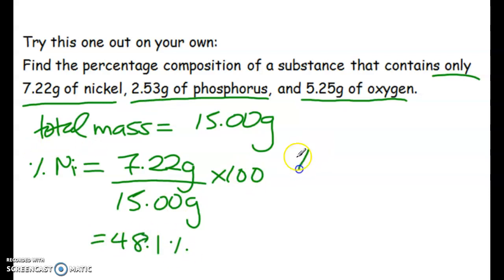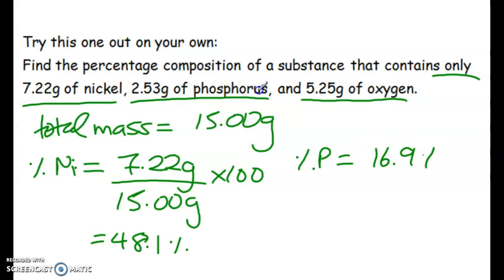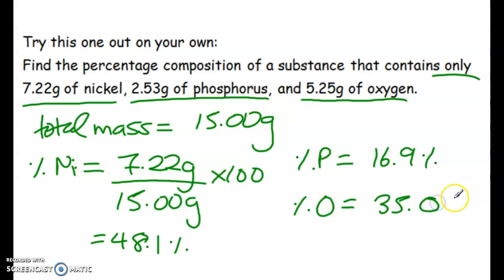Doing the same for the others: phosphorus is 16.9% and oxygen is 35.0%. The same procedure applies — mass of that element over the total mass, times 100.